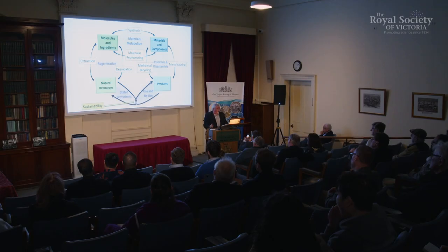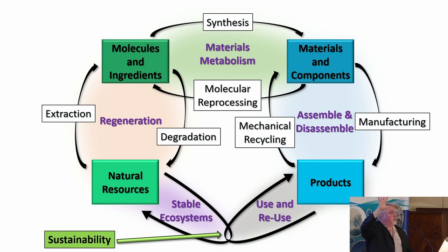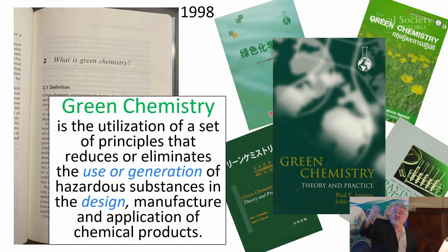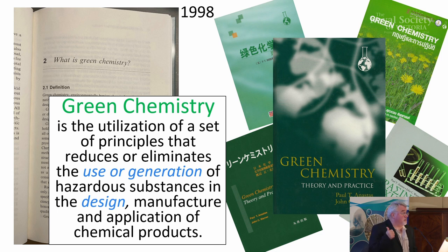Sometimes we get caught up in separating the human-built world from the natural world. We humans are organisms that are a result of evolution — we are as much a part of nature as anything else. Thinking of ourselves as outside of nature puts us in the wrong place. And that is essentially where green chemistry fits in. Every one of those cycles is where green chemistry — the utilization of a set of principles that reduce or eliminate the use or generation of hazardous substances in the design, manufacture, and application of chemical products — operates.